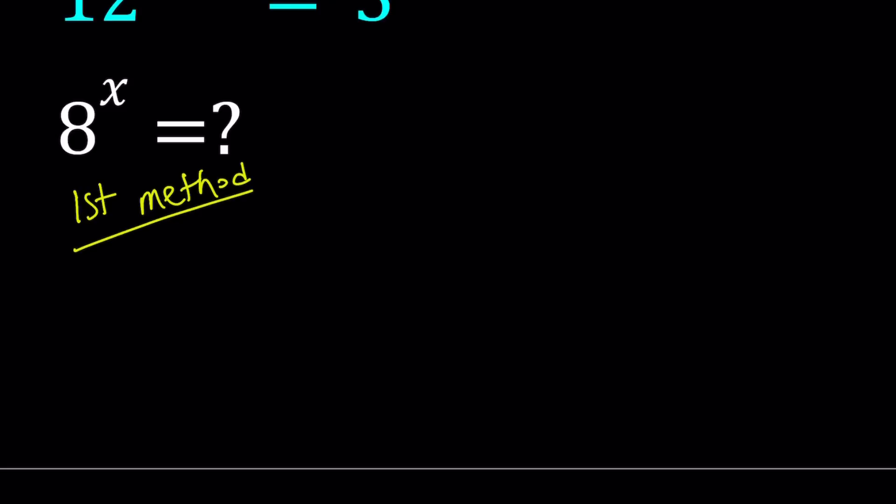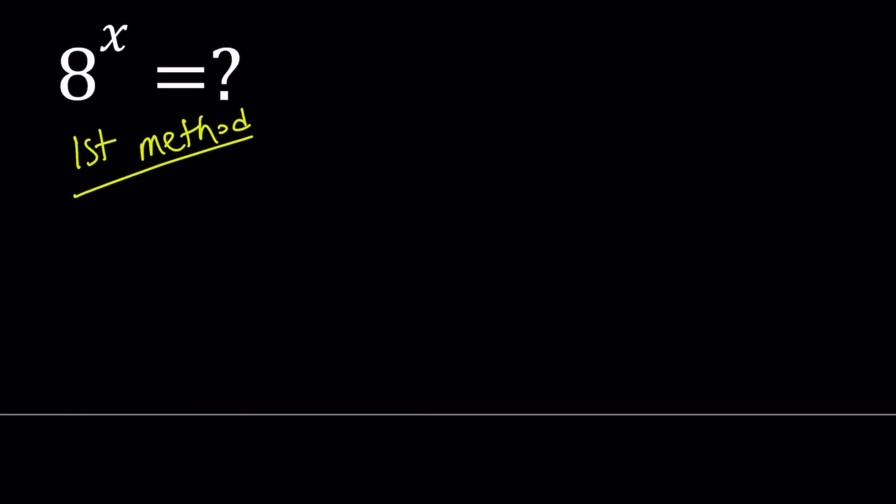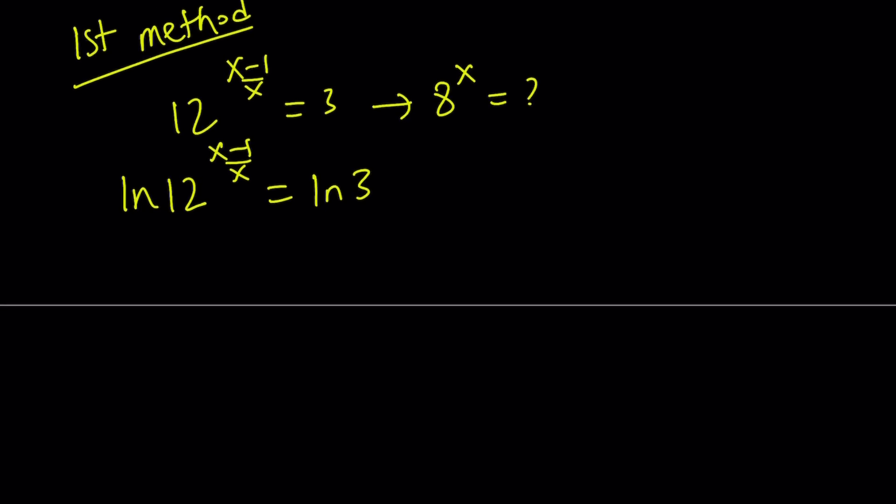So for my first method, I'm going to ln both sides. We have 12 to the power x minus 1 over x equals 3, and from here we're supposed to find 8 to the power x. Let's go ahead and ln both sides. By the way, you don't have to use ln. You can use any base - log base 10, natural log, base 3, base 12, whatever. It doesn't matter, you're going to get the same thing.